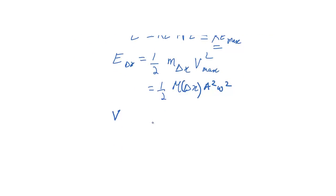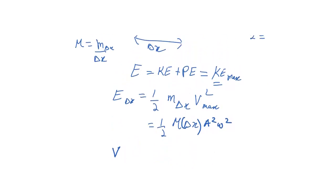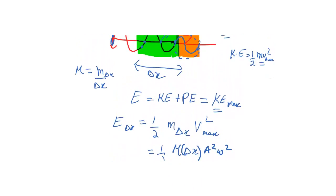Replacing δx with v in our energy formula, the average power produced by the source is P_avg = ½μva²ω². This is the average power — it tells us that on average, this much power is produced every second.